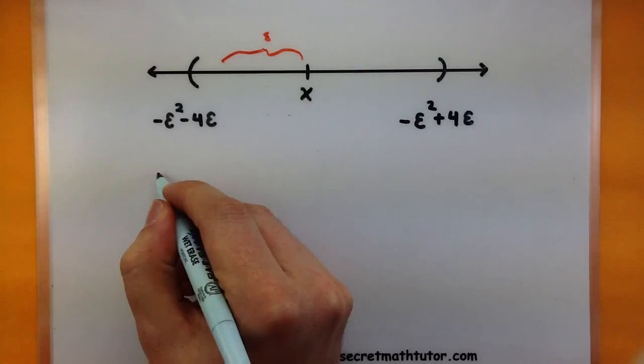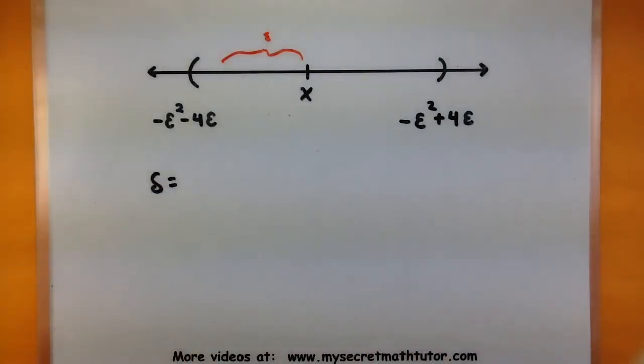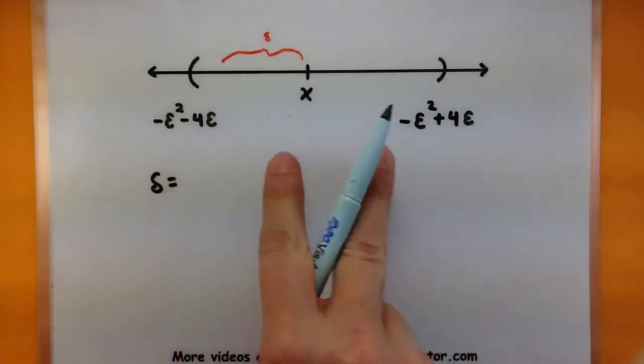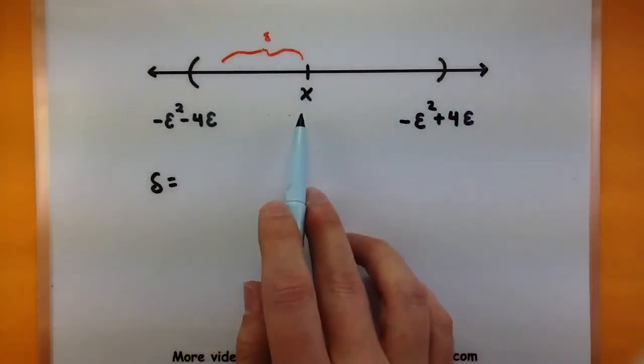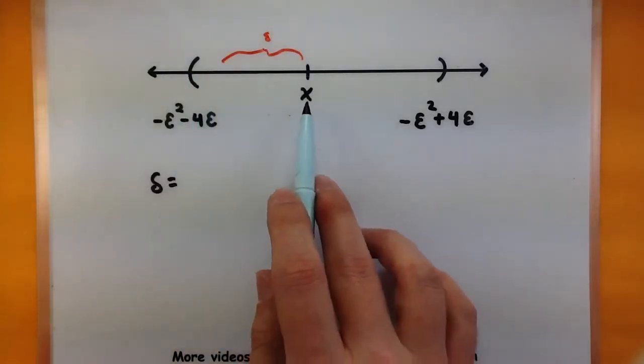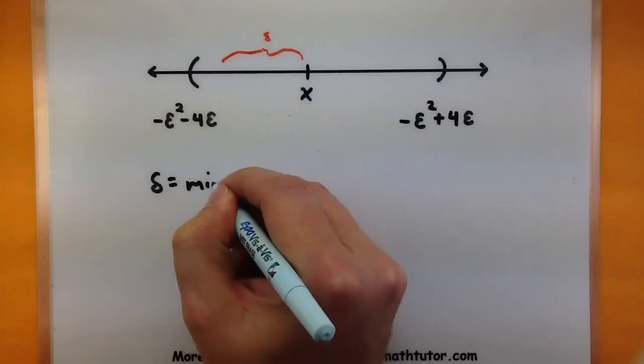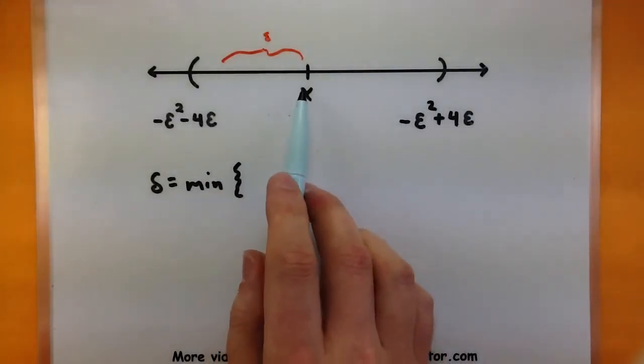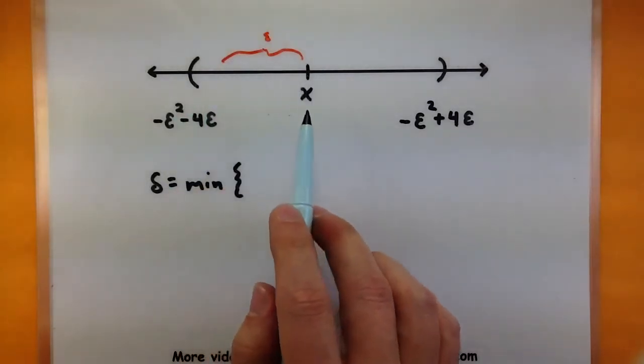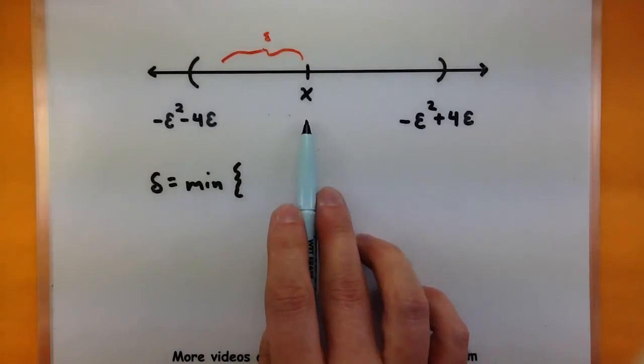Well, what I'm going to do is I'm going to take my delta, and I'm going to choose it to be the minimum distance of these two. So if I were to make a comparison and say, how far is x from this guy and how far is x from this one, I'll take the smallest of those. So delta is the minimum. Let's see, how can I figure out how far this is away? Since x is approaching zero, this guy is basically at zero.